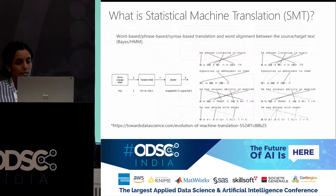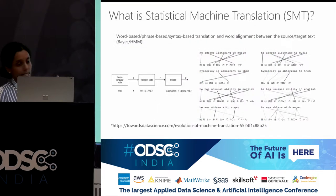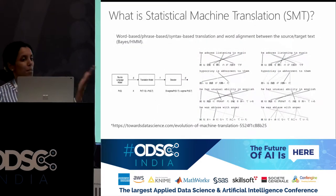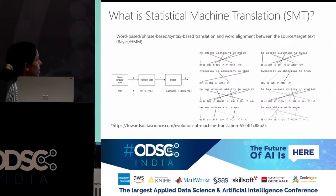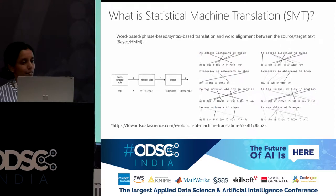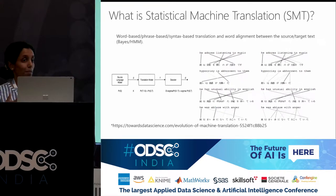Over the next couple of slides we'll look at what statistical machine translation is. It's either word-based, phrase-based, or syntax-based translation, and there's a bit of alignment that needs to be done because many times each word doesn't map to a single word — it might map to multiple words in a different language.